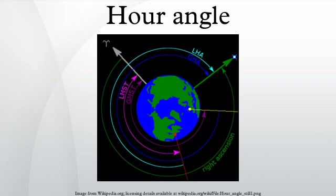In astronomy and celestial navigation, the hour angle is one of the coordinates used in the equatorial coordinate system to give the direction of a point on the celestial sphere.